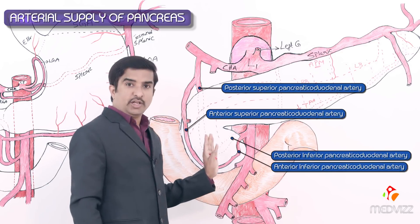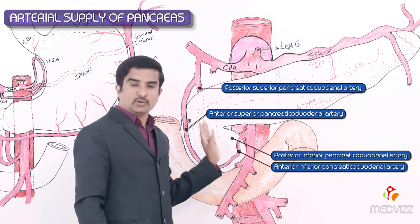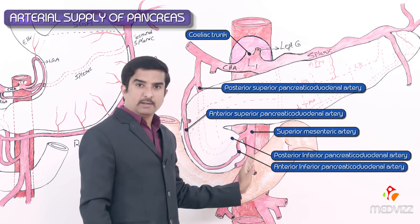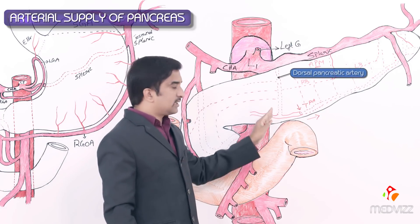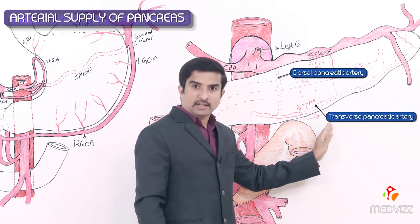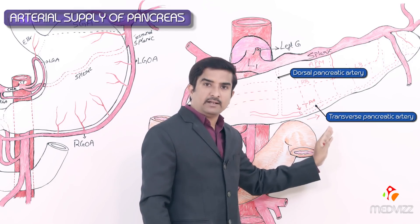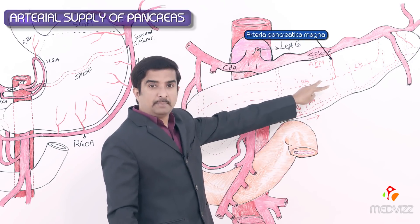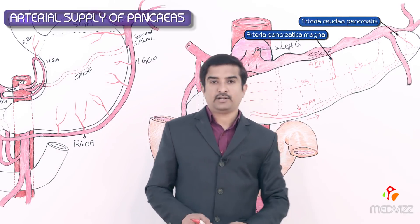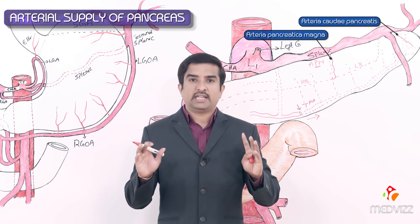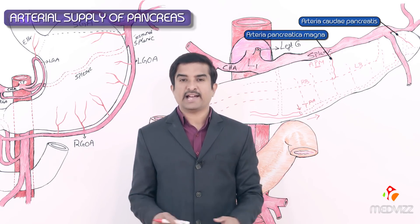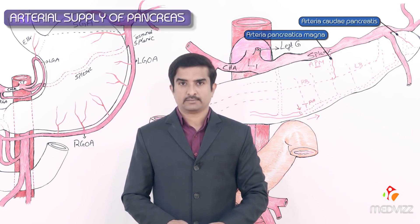In summary, the arteries supplying the pancreas are: the pancreaticoduodenal arteries — superior and inferior — from the celiac trunk and superior mesenteric artery; the dorsal pancreatic artery; the transverse (inferior) pancreatic artery; the arteria pancreatica magna; and the caudal pancreatic artery. Together, these give important blood supply to the head, neck, body, and tail of the pancreas.